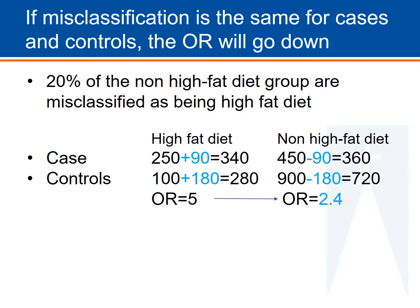Using the example from Rothman, this odds ratio table illustrates the concept that non-differential misclassification will bring the odds ratio closer to 1. This example shows that if everyone in the non-high fat diet group is misclassified, it drives the odds ratio down. The 20% misclassification is the same for everyone. The blue numbers show what would happen if 20% of the non-high fat diet group were misclassified as having a high fat diet even though they really don't. In this case, the true odds ratio would be 5, but the odds ratio you would see from your data, the one in blue, is 2.4.